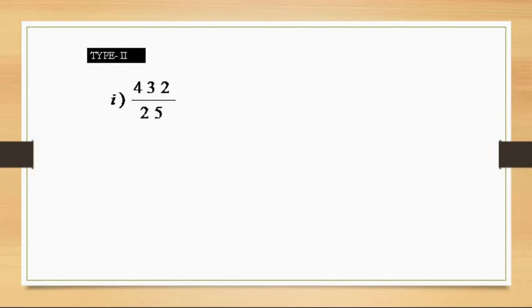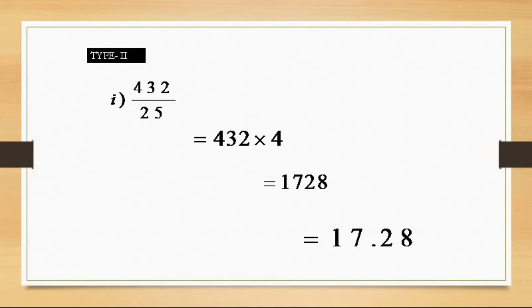Now Type 2: any number that can be divided by 25. For example, 432 divided by 25. We multiply 432 by 4 to get 1728. Then we place the decimal after two digits from the right, giving us 17.28 as the answer.